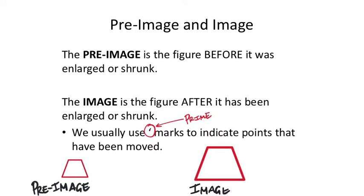The figure I started with before enlarging is the pre-image; the figure after I enlarged it is the image. If I said the bottom-left corner was point A on the pre-image, it has a corresponding point on the image called A prime. If we see letters that are the same but one has a prime mark, it's clear that it is the image. No prime mark means it's the pre-image. That brings us to what we call corresponding parts of figures.